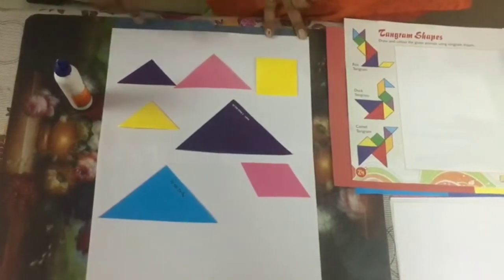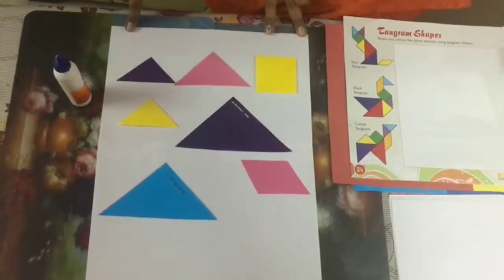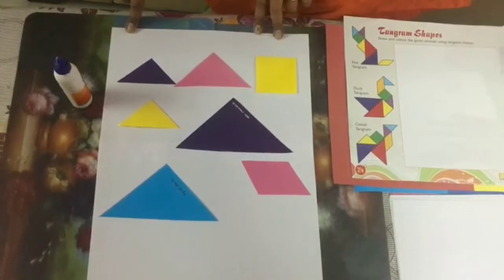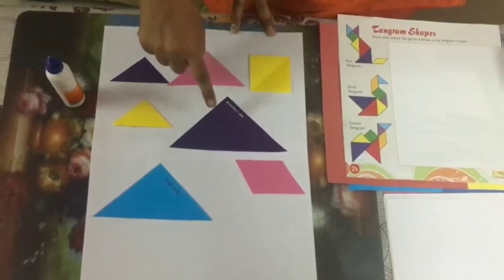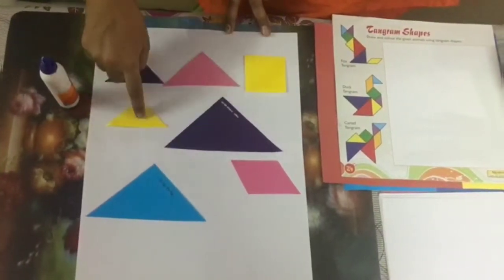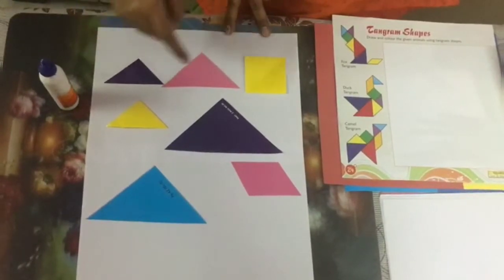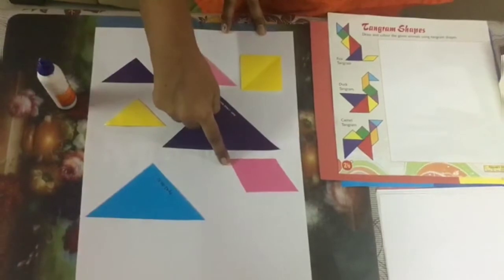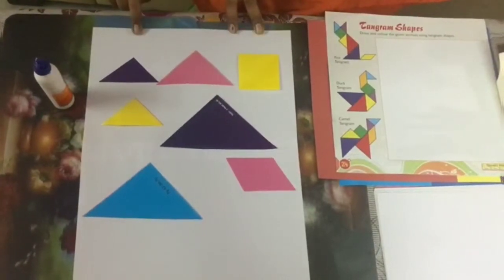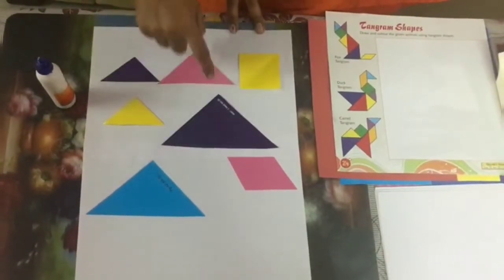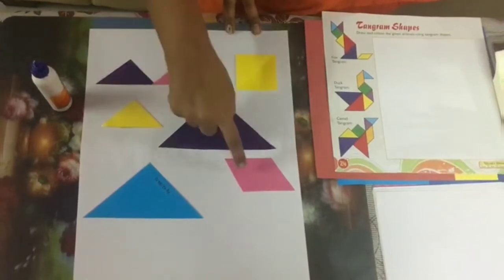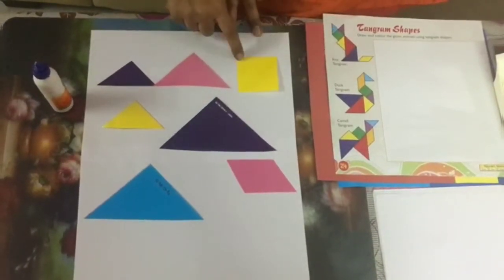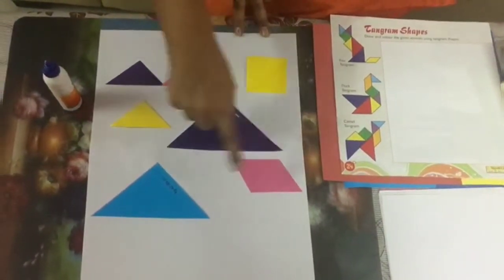So we require for it only a plain sheet. How many things are required? Five triangles - one, two, three, four, five - one square, and one parallelogram. I repeat again: it's an activity based on five triangles, one parallelogram, and one square. Total seven pieces.